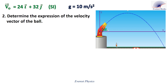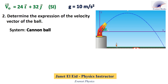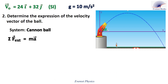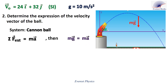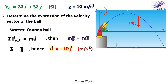Let's move to part 2: determine the expression of the velocity vector of the ball. Our system is the cannonball. Let's use Newton's second law to determine its acceleration. The only force acting on the ball is its weight, mg. Then mg equals ma, therefore a equals g. Now look at the y-axis — it is oriented positively upwards, but the gravitational acceleration is vertically downwards. Then a equals minus 10j, expressed in meters per second squared.